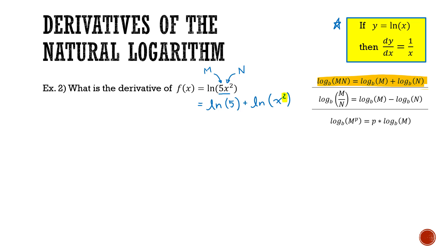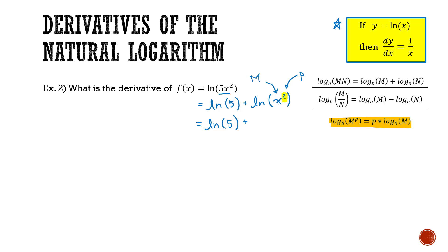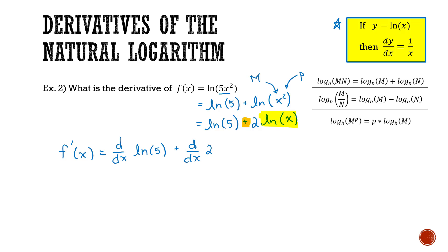Now I'll use the power rule of logarithms: the log of m to the power of p equals p times log of m. Here m is x and p is 2, so ln of x squared becomes 2 times ln of x. So f of x is rewritten as ln of 5 plus 2 times ln of x. Now I finally have the expression in the form ln of x. I can see I have the sum of two terms so I can use the sum difference rule, giving the derivative of ln of 5 plus the derivative of 2 ln of x.